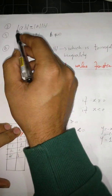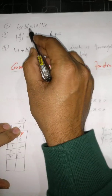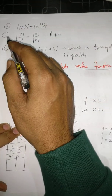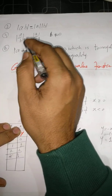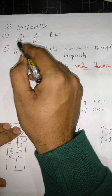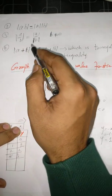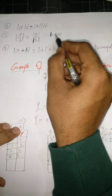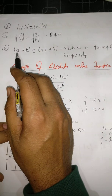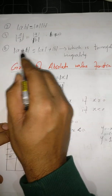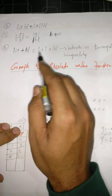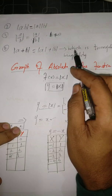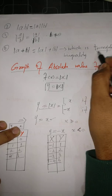The second property: |a·b| = |a|·|b| — the mod of a product equals the product of the mods. The third property: |a/b| = |a|/|b|, where the denominator must be non-zero, so b ≠ 0. The fourth property is the triangle inequality: |a + b| ≤ |a| + |b|, a very famous inequality.